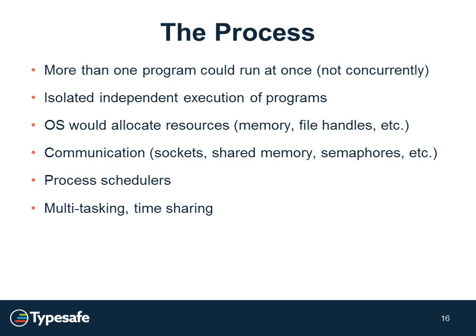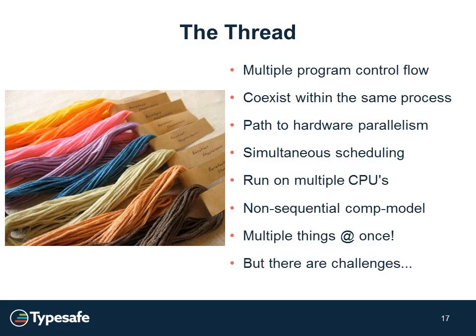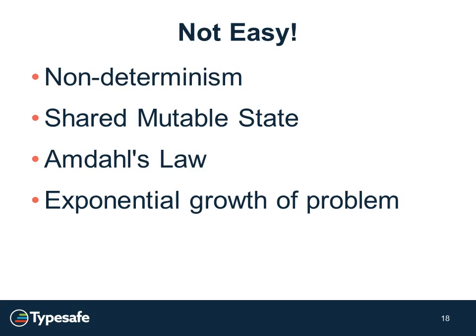You had this idea of multitasking. Then what came along was the threading model — a fantastic model that allowed the idea of a multi-program control flow to exist within the same process. This began to lay the path to the notion of parallelism and simultaneous scheduling. However, the result led to some significant challenges, primarily non-determinism.